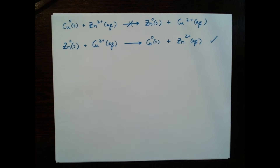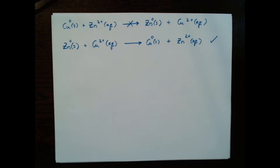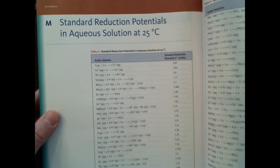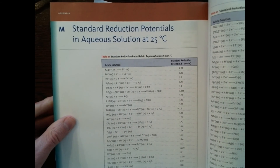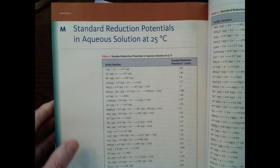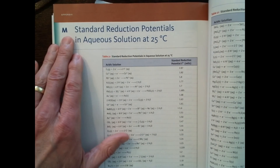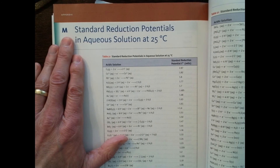Now how can we predict this? We're going to predict this by calculating what's known as the cell potential, and we do that by using the standard reduction potentials found in appendix M in the back of your text.